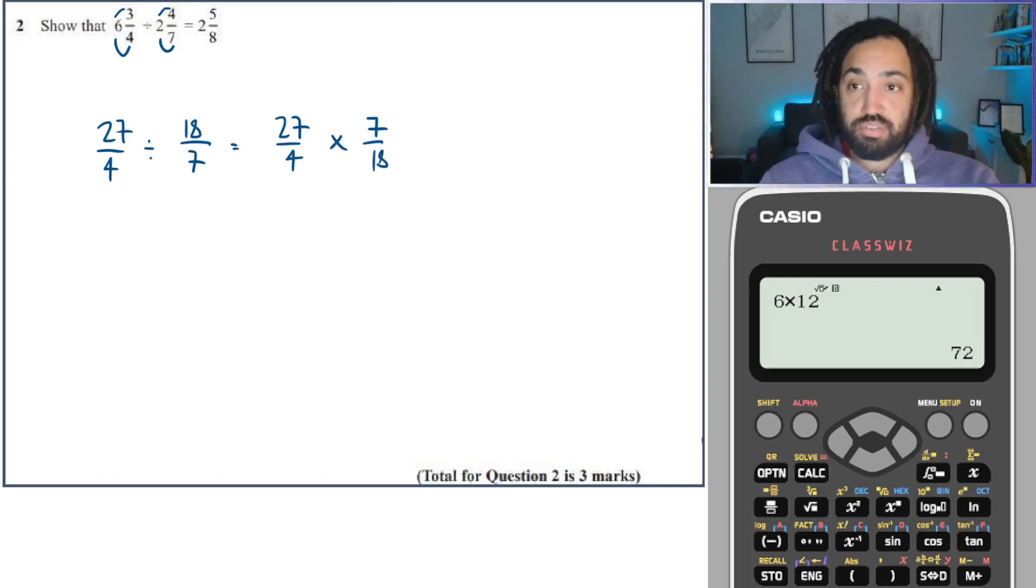Okay, let's look for some common factors. Well, 27 and 18 both divisible by 9. So 3 times and 2 times. And then we've got 3 times 7, which is 21. And we've got 4 times 2, which is 8. How many eights go into 21? Well, 2 makes 16. And 16 needs 5 more to make it up to 21. So that is 2 and 5 eighths. Quick check over here. We've got the same. We're good to go. Bosh.